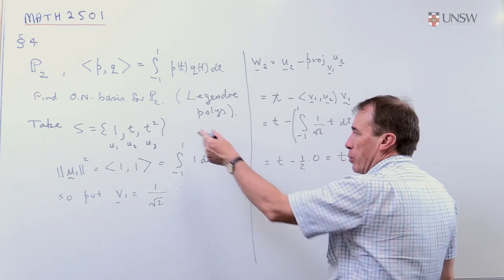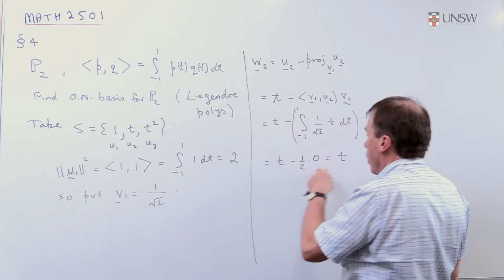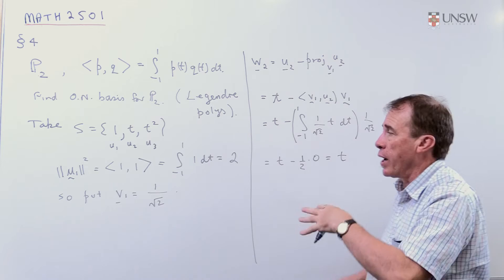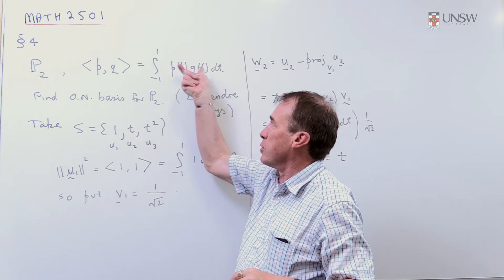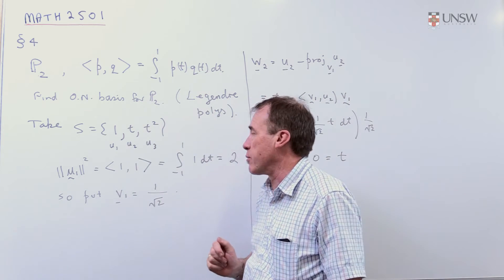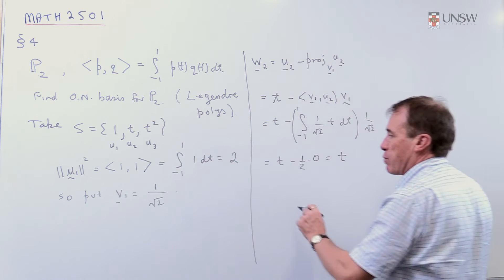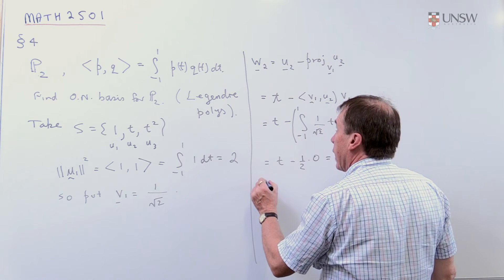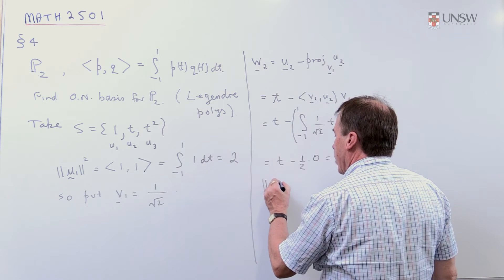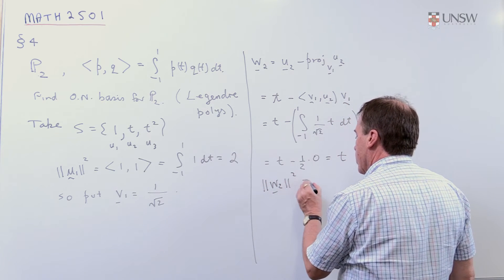Now, we have to normalise this vector. Well, by the way, we didn't know that a priori. There's no way of telling that these two are orthogonal. Well, I suppose you can do the calculations up here and check they're orthogonal. But it wasn't instantly obvious, so we had to go through the Gram-Schmidt process.